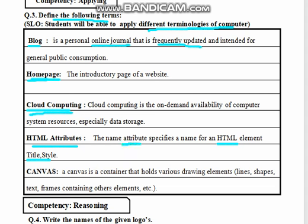Attributes we use in HTML pages include color, size, and font. Next is canvas. A canvas is a container that holds various drawing elements like lines, shapes, and text. When you use a computer, this container can hold many shapes, lines, and colors.